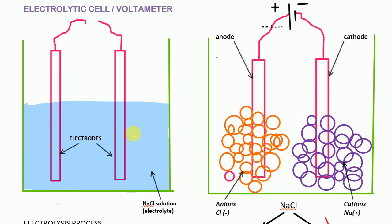Initially these electrodes are not connected to any battery. After connecting these electrodes to the battery, the left-hand side electrode, which is connected to the positive terminal of the battery, will become positively charged, and the right-hand side electrode, connected to the negative terminal, will become negatively charged. So in the NaCl solution we have one positively charged electrode and one negatively charged electrode.